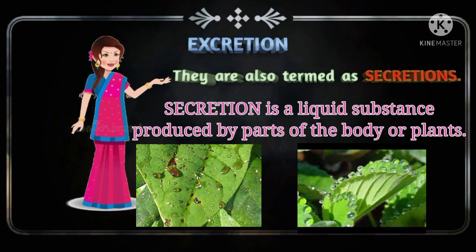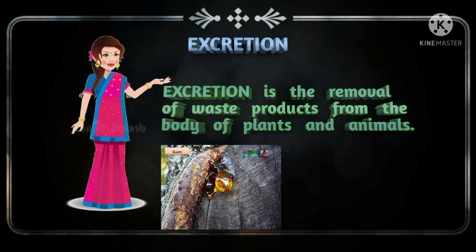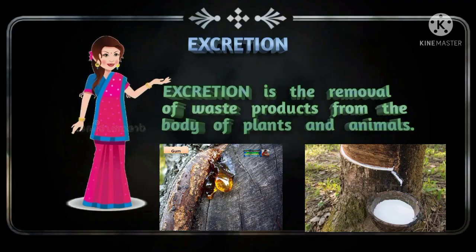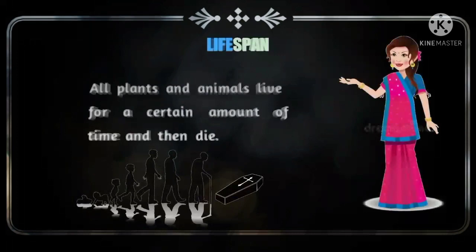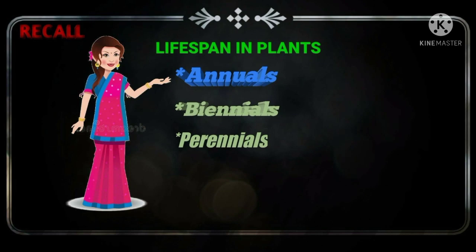Okay, students. What is excretion? Excretion is the removal of waste products from the body of plants and animals. Okay, students, let us recall once again. All plants and animals live for a certain amount of time and then die. Based on their lifespan, plants are classified as annuals, biannuals, and perennials.